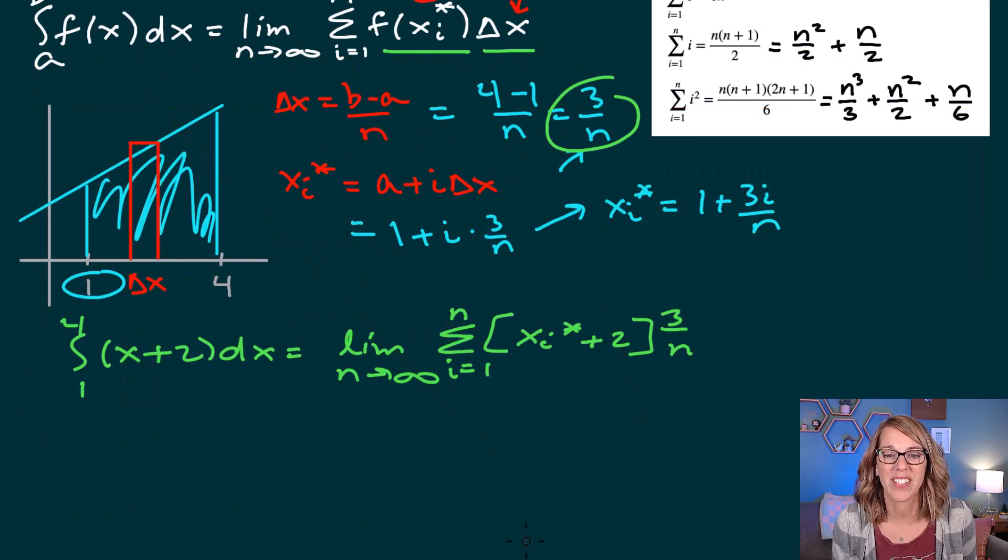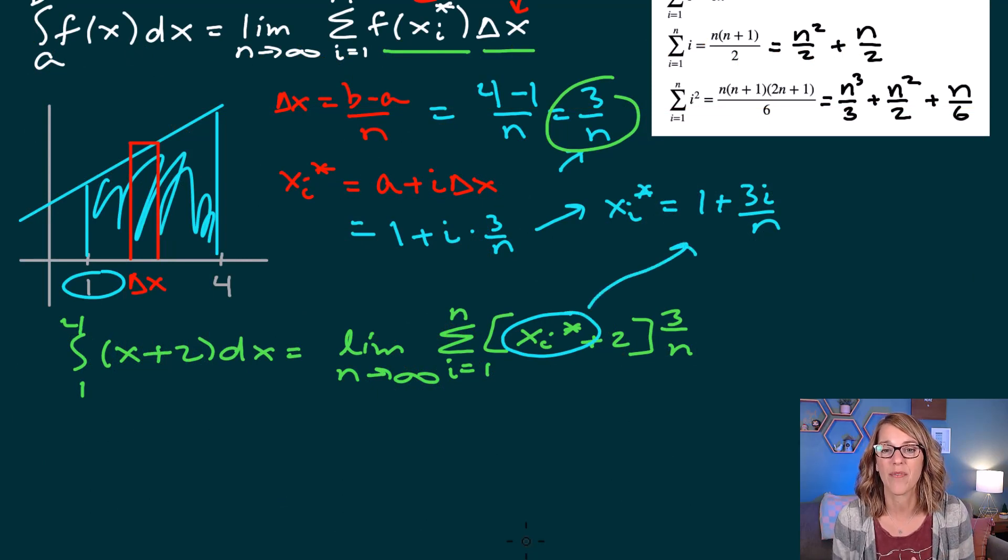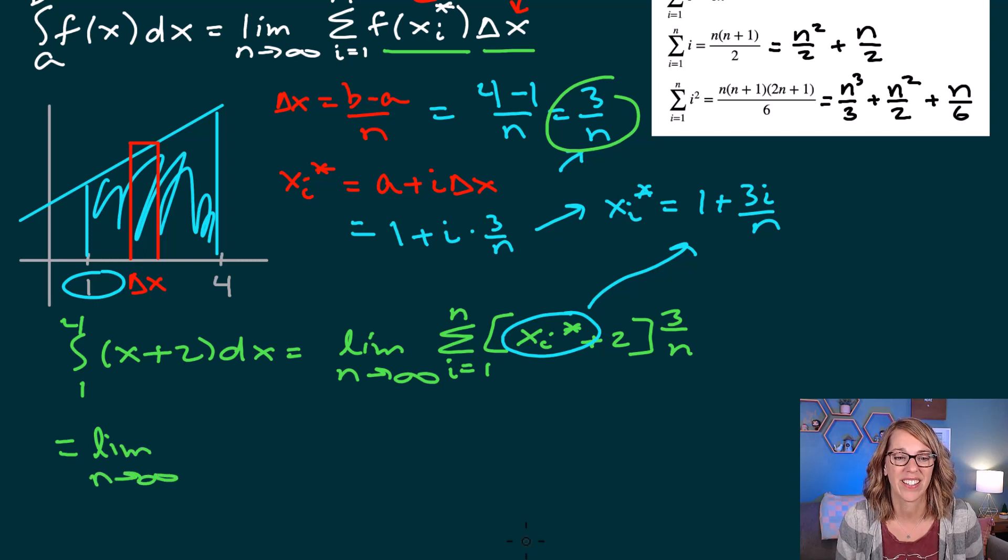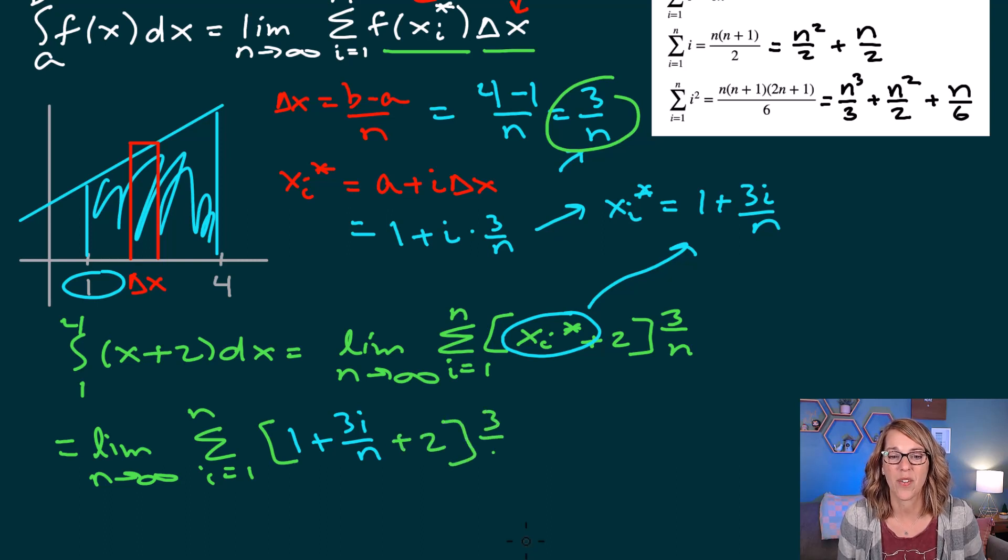I've got one more thing to replace in this formula, and that's my x sub i star. I want to replace that for 1 plus 3i over n, which applies to my example. So our formula looks like this. I've got the limit as n goes to infinity, summation i goes from 1 to n. Let's go ahead and replace that x sub i star with 1 plus 3i over n. And then I've got that plus 2. And then on the outside, we had 3 over n.